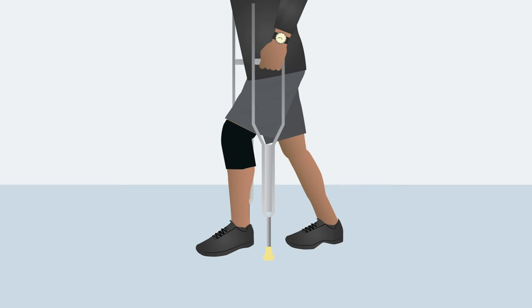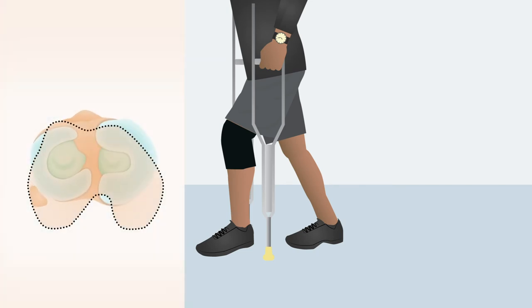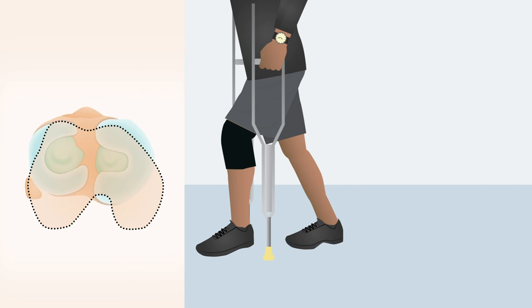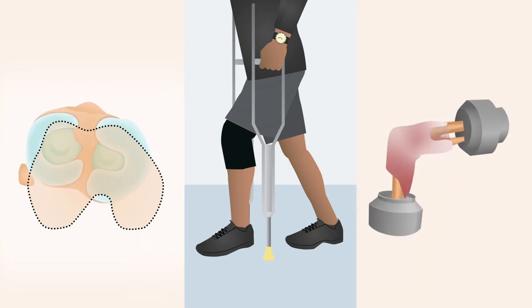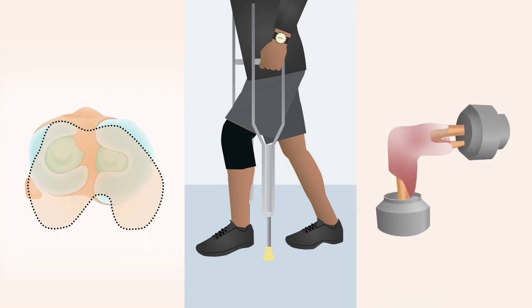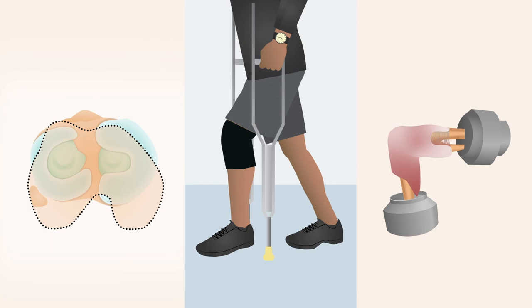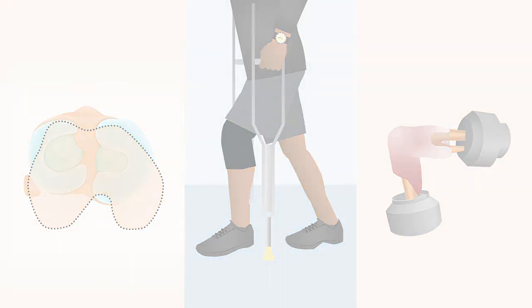Nevertheless, the findings are informative. They suggest that the role of Kaplan fibers in controlling rotational laxity in acute ACL injury may be less evident in the clinic than in a biomechanical setting.